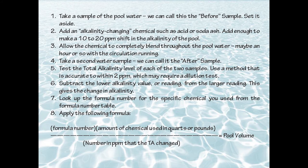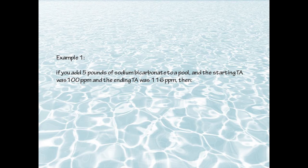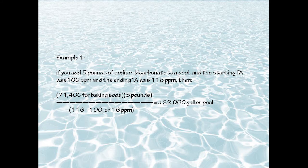Here's an example. If we added five pounds of sodium bicarbonate — baking soda — to a swimming pool, and the starting alkalinity was 100 and the ending alkalinity was 116, the change was 16 parts per million. The formula number for sodium bicarbonate is 71,400. So: 71,400 times 5, divided by 16, equals 22,000. We know that we have a 22,000-gallon pool.